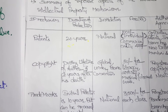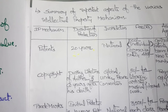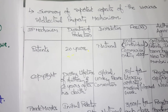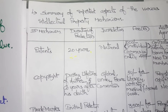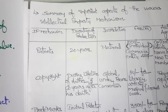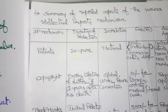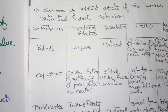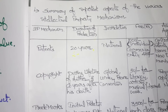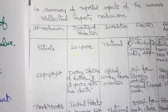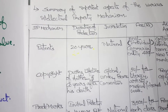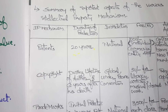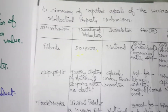For patents, the duration of protection is 20 years. If you have taken patent rights on a product, those rights are valid for up to 20 years. For the first two years there is no need for renewal, but from the third year to the 20th year, you need to take renewal.